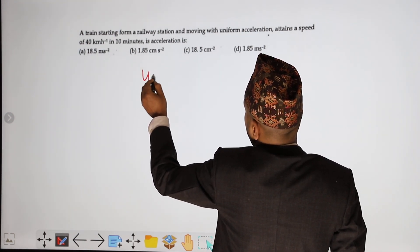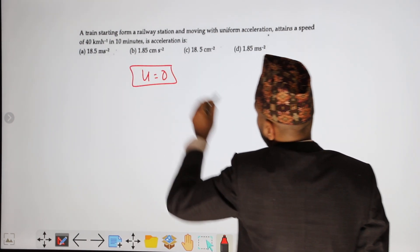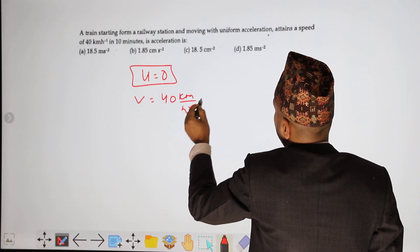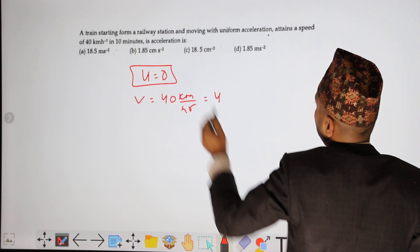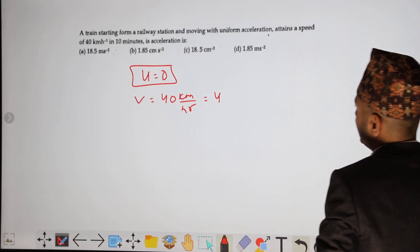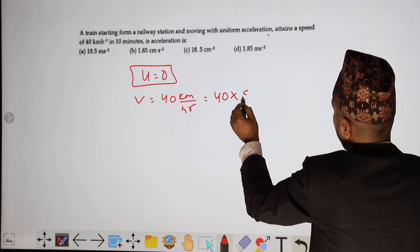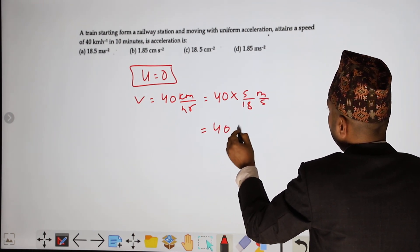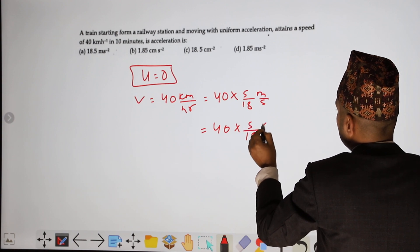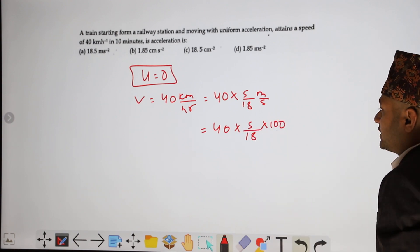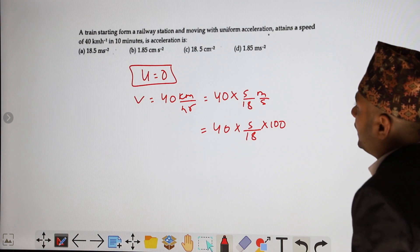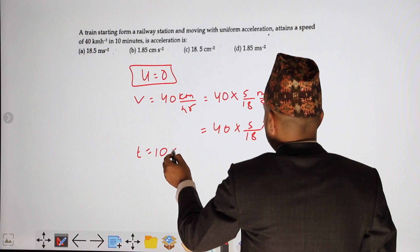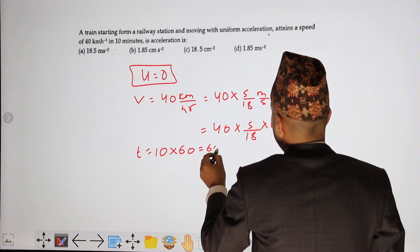A train starts from a railway station from rest; final velocity is 40 km per hour. Convert to centimeter per second: 40 times 5 by 18 into 100. Time is 10 minutes, which equals 10 times 60 equals 600 seconds.